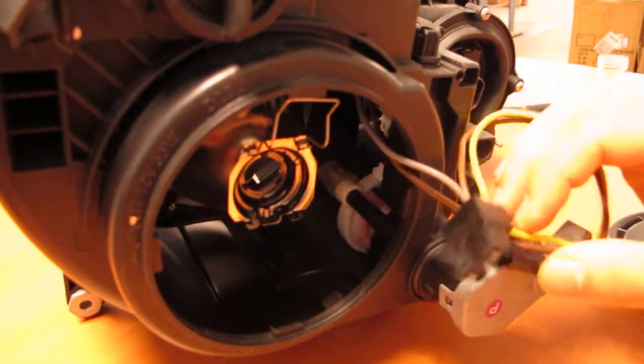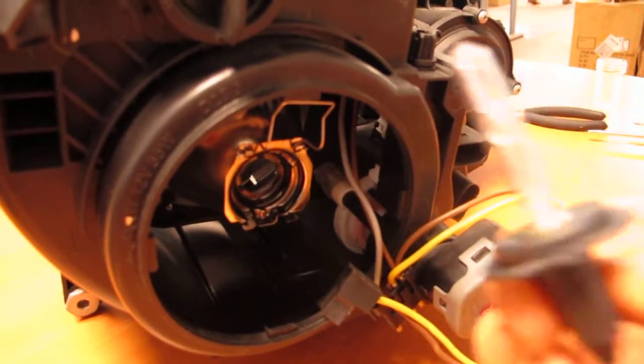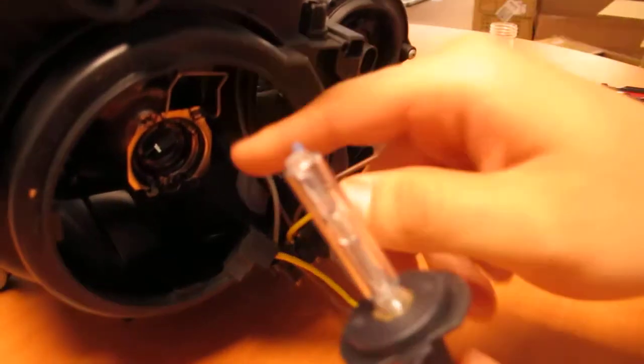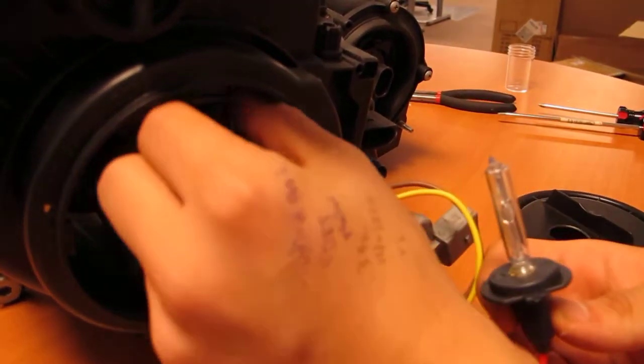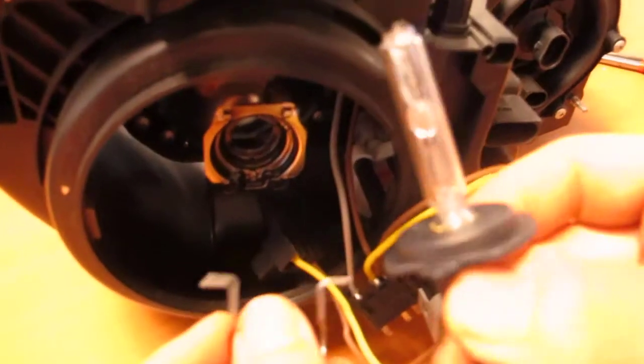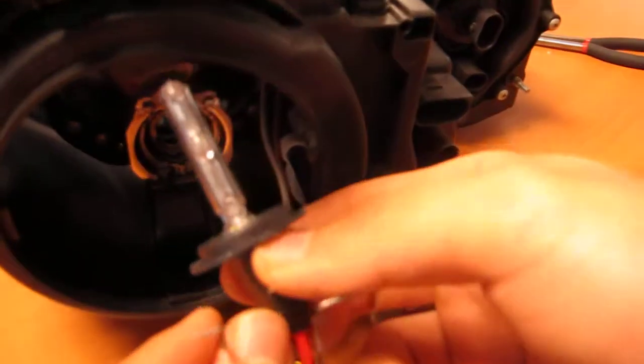However, if you're wishing to replace that HID bulb, this is an example of an HID H7 bulb. How you can connect this into the internal housing is by removing this clip by squeezing. So once you have that removed, you'd want to loop it or tuck it right underneath the H7 bulb.